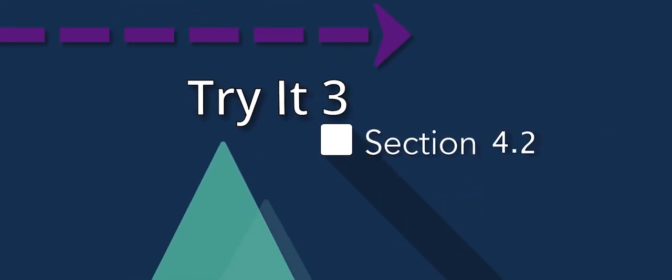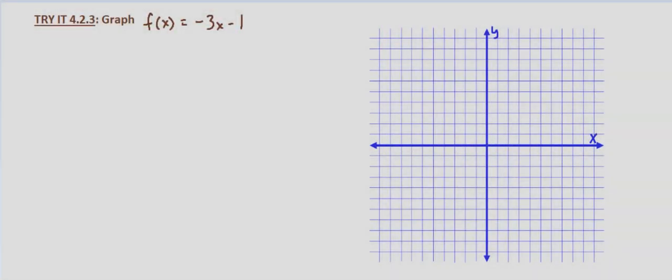In this problem, we're looking at graphing the function f(x) = -3x - 1. Similar to other aspects going from equations and relations to functions, in this case we're looking at graphing in the same way we have in the past.